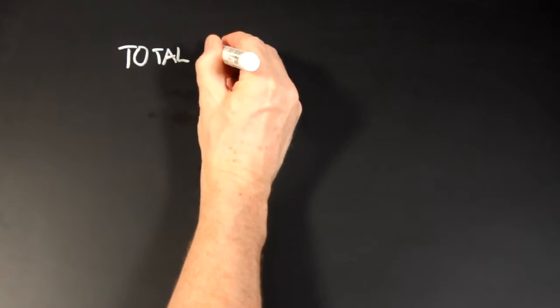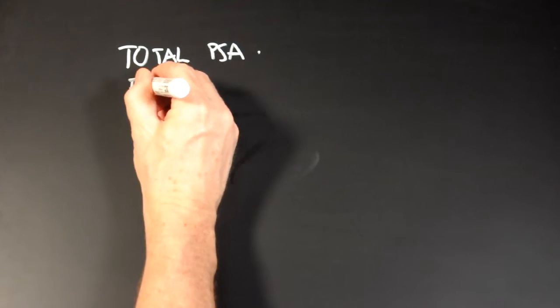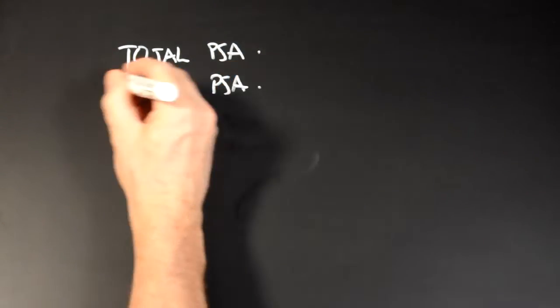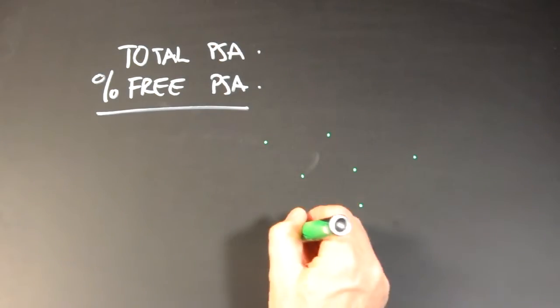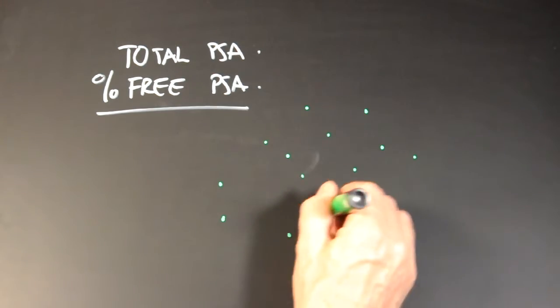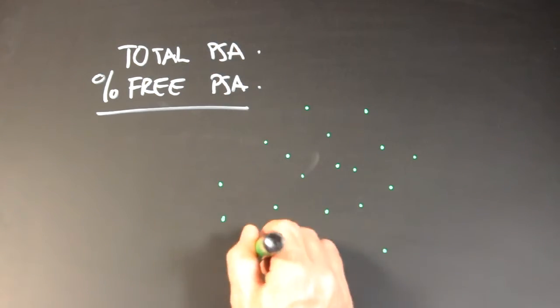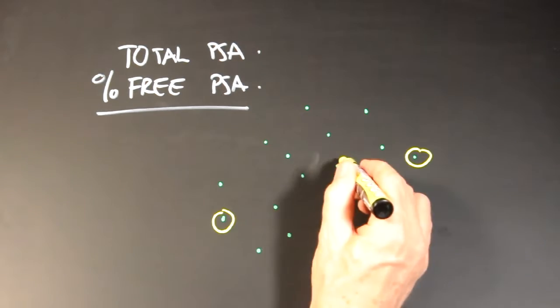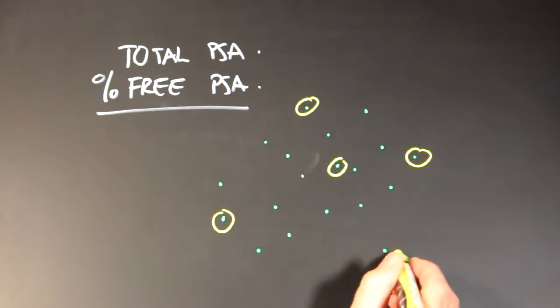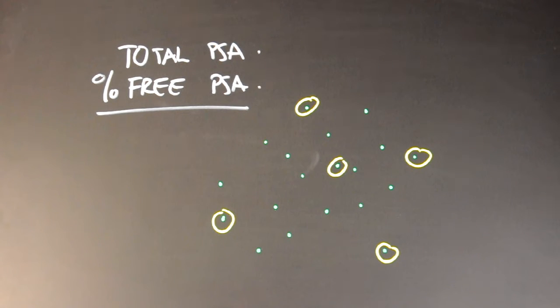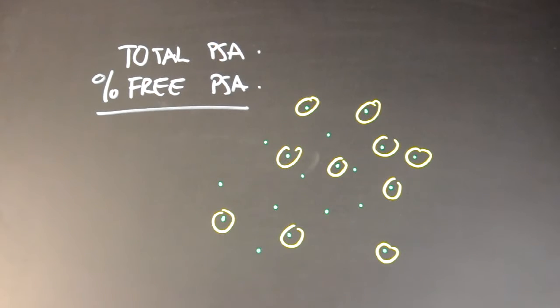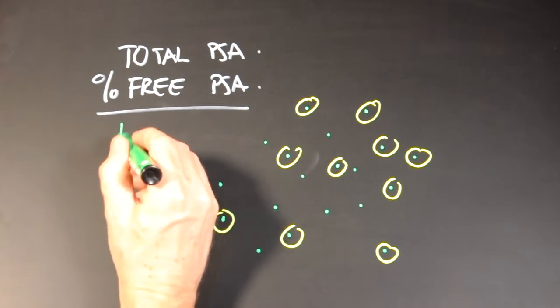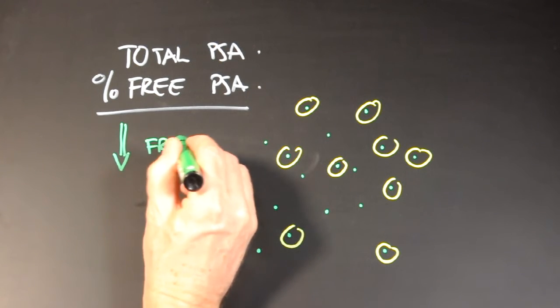The reading that we get is the total PSA. You'll often see a percent free PSA reported as well. When PSA is released into the blood, it is released as a free molecule unbound. In the normal setting, a certain amount of this PSA is bound by plasma proteins. We can measure the amount that's free, and we can measure the total PSA. In the presence of prostate cancer, we think that some of this PSA is abnormal, and more of it is bound up by plasma proteins, so the amount that's free goes down.